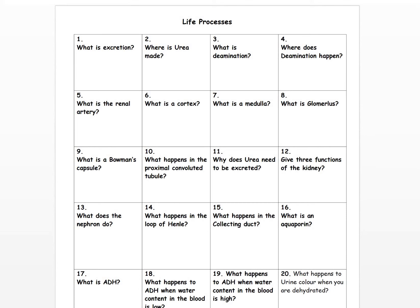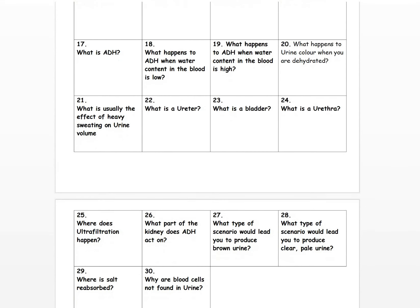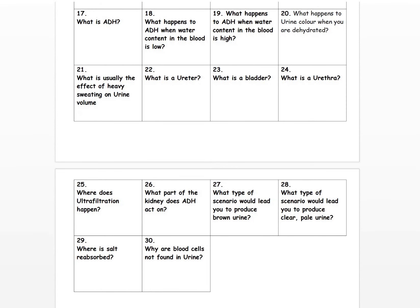Question thirteen: what does the nephron do? It's the functional unit of the kidney. It's the site of filtration and the site of reabsorption. Question fourteen: what happens in the loop of Henle? You will have reabsorption of water and reabsorption of salts. Question fifteen: what happens in the collecting duct? Reabsorption of water. Question sixteen: what is an aquaporin? It's a channel in the collecting duct through which water is reabsorbed. It's affected by ADH — high levels of ADH broadly cause the aquaporin to open up more. Question seventeen: what is ADH? It's a hormone that affects the reabsorption of water in the kidney. It's called anti-diuretic hormone.